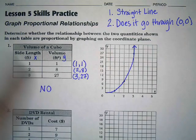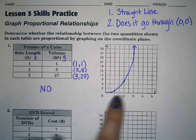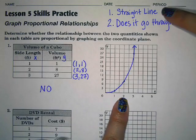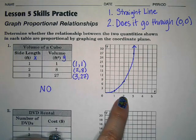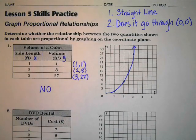So the first thing you're going to do is go ahead and plot your points on the graph and then ask yourself, is it a straight line? Does it go through the point zero zero? If both of these are true, then it is a proportional relationship. Thanks a lot. Have a great day.